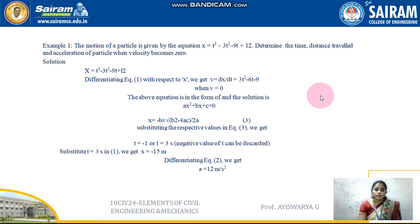We already know that X or S denotes the distance travelled, and DX or DS means displacement or distance. Time is denoted by T. Velocity means rate of change of displacement, that is DX/DT or DS/DT. Acceleration means rate of change of velocity, that is DV/DT. The unit of velocity is meter per second and the unit of acceleration is meter per second square.